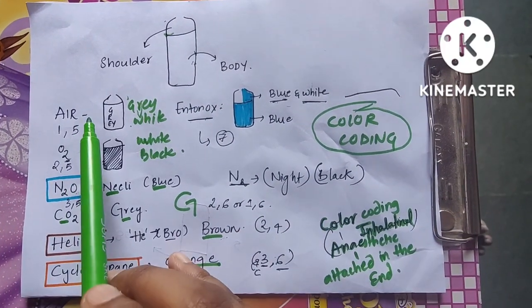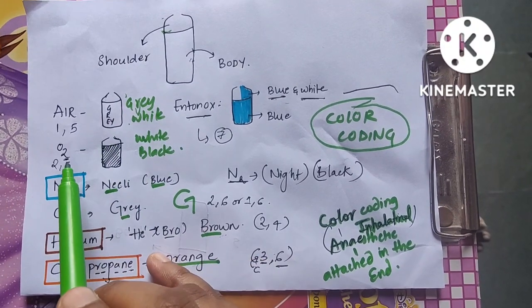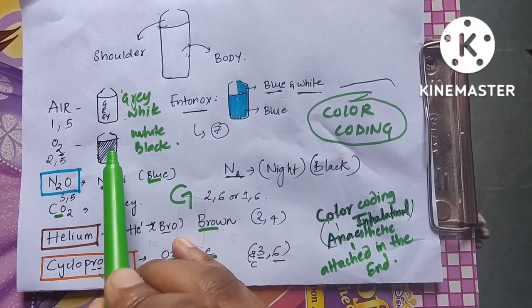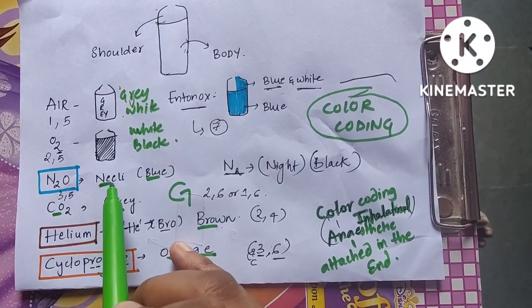First comes air: gray body and white shoulder. Oxygen is white shoulder and black body. Nitrous oxide - remember it has neely, neely for blue sky - so nitrous oxide is blue. But there is one more term called nitrogen cylinder.